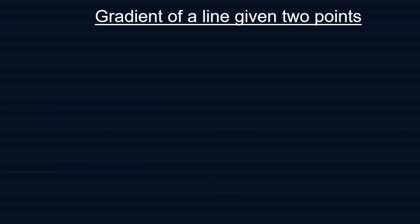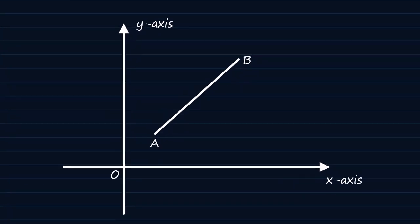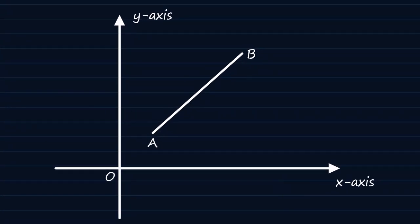Now if you look at this graph you can see the line AB which has the points A and B at its ends. Point A has coordinates x1, y1 while point B has coordinates x2, y2.